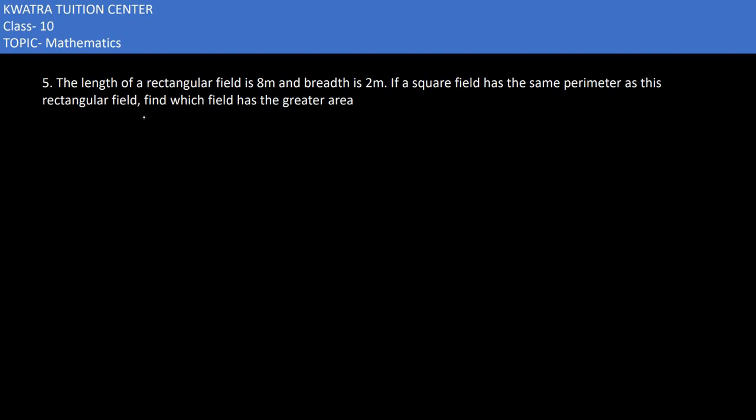Have a look at the fifth one. Here it says we have a field with a length of 8 meter and breadth of 2 meter. This is 8 and this is 2. And they are saying it is a square field.